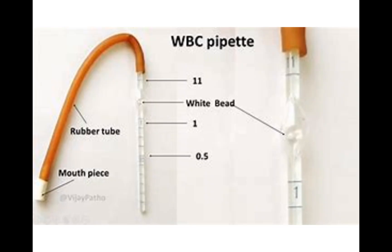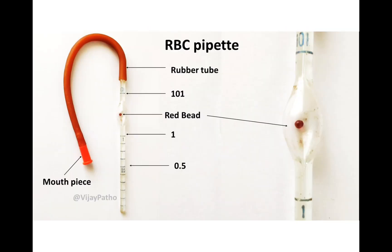Coming to WBC and RBC pipettes: the WBC pipette has a white bead — white for WBC — and graduation up to 11. The RBC pipette has a red bead — red for RBC — and graduation up to 101. WBC count is normally 4,000–11,000 (lower), hence the smaller graduation; RBC count is 4.5–5.5 million per mm cube in adult males (much higher), hence the larger graduation of 101. Also, the bulb of the RBC pipette is bigger.